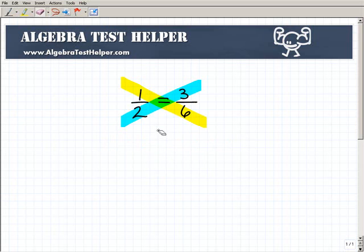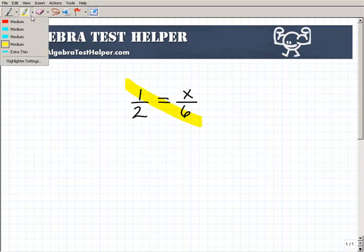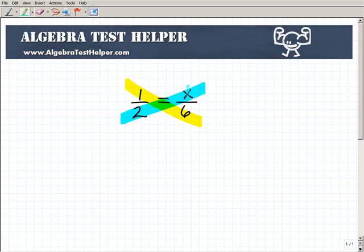So using the cross product property, we can solve a proportion. So let me show you how this works now. Now let's just kind of get rid of that 3, and let's say we have x. So I have one fraction equal to another fraction. Now I want to solve this equation. If you recognize that this is a proportion, it's one fraction equaling to another fraction, you can automatically say, okay, I want to use the cross product. This times this will be equal to this times this.